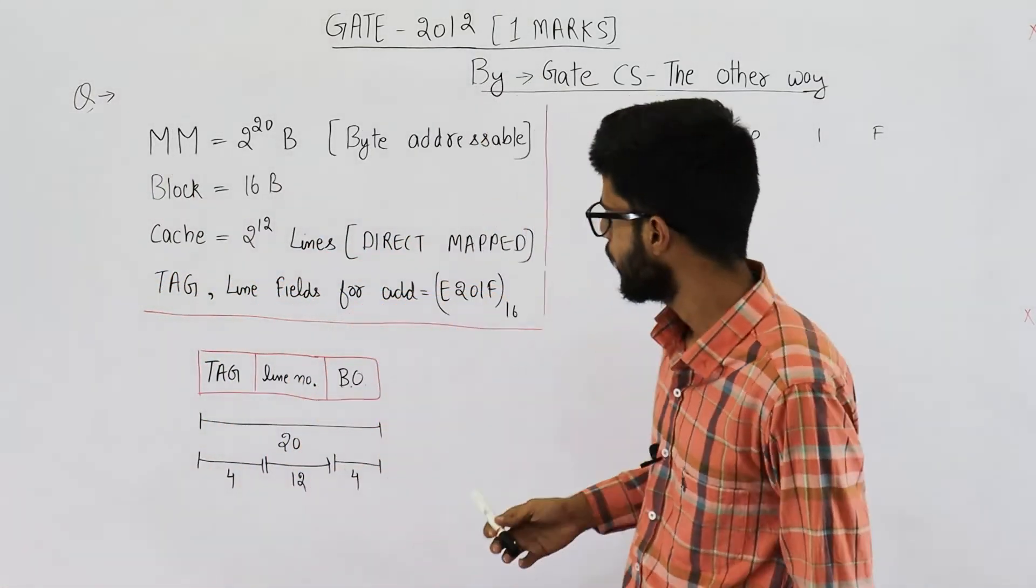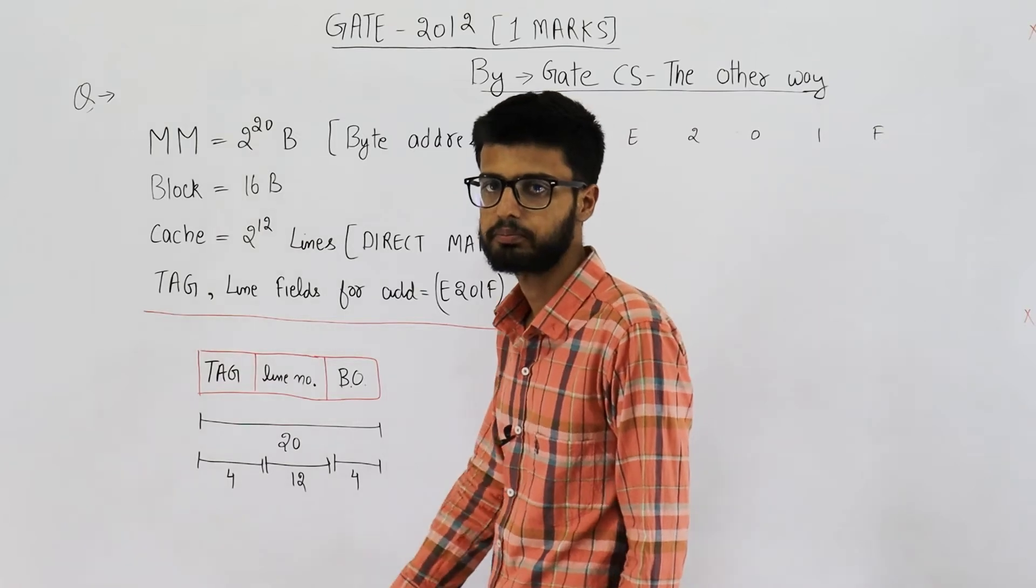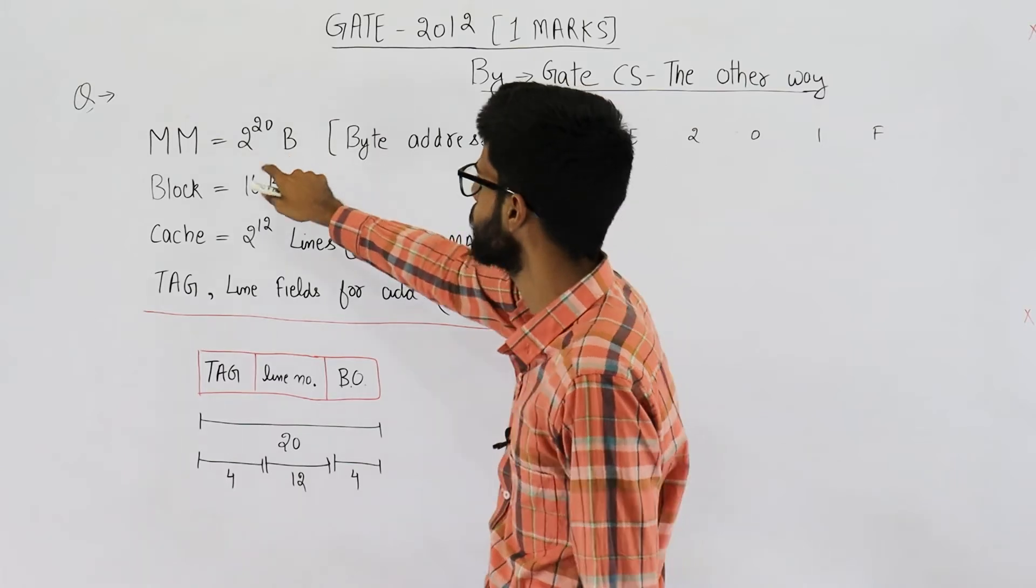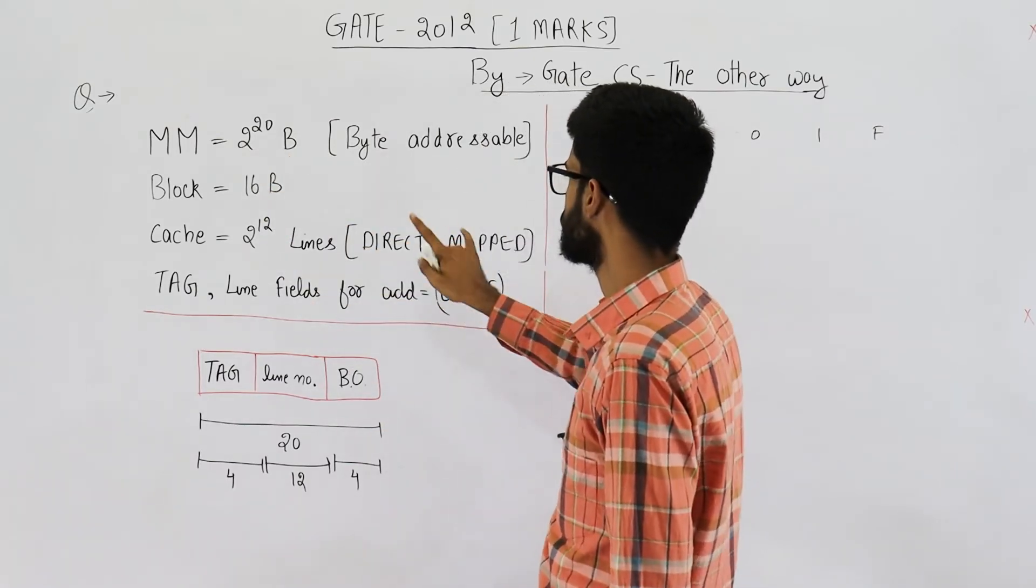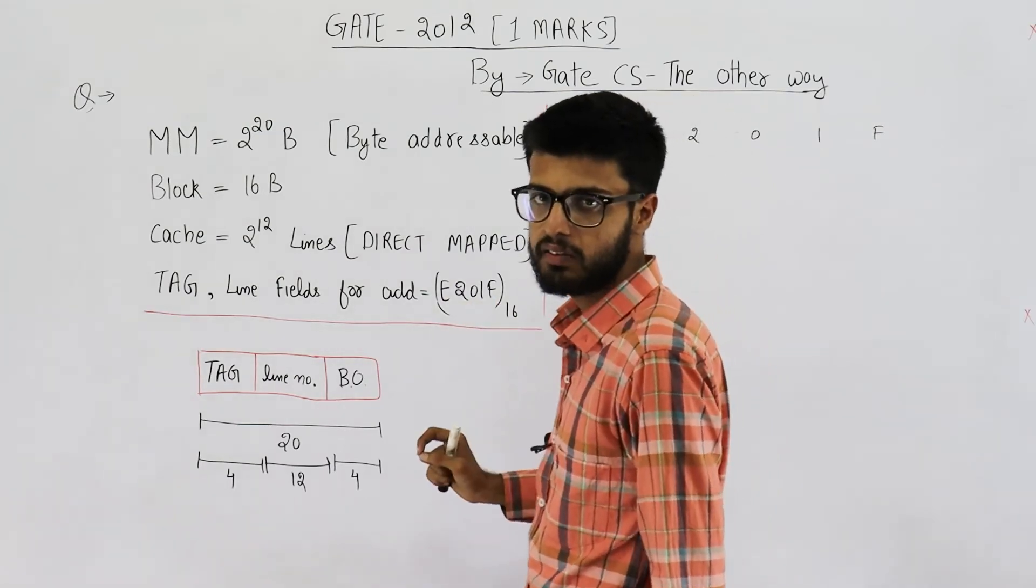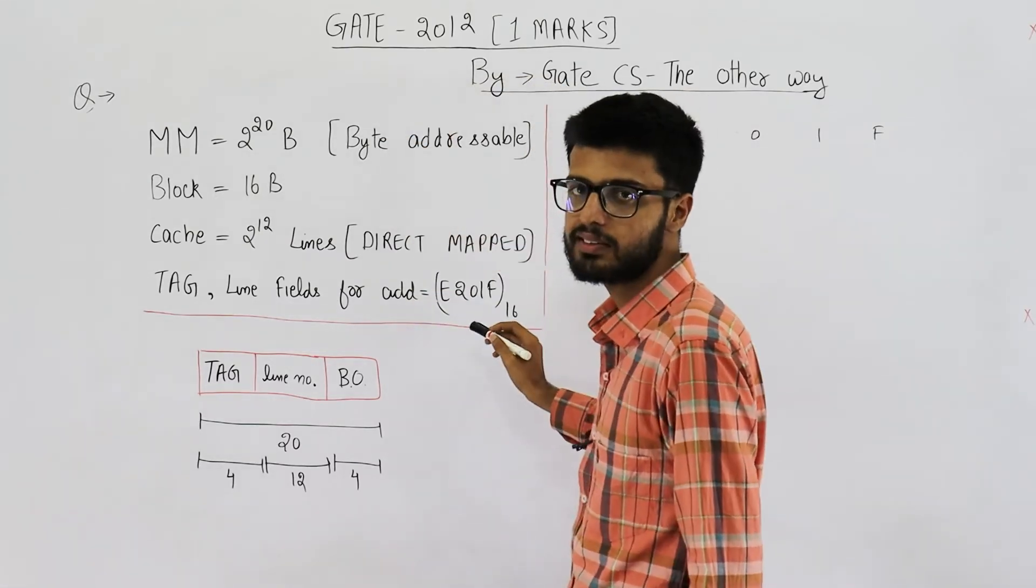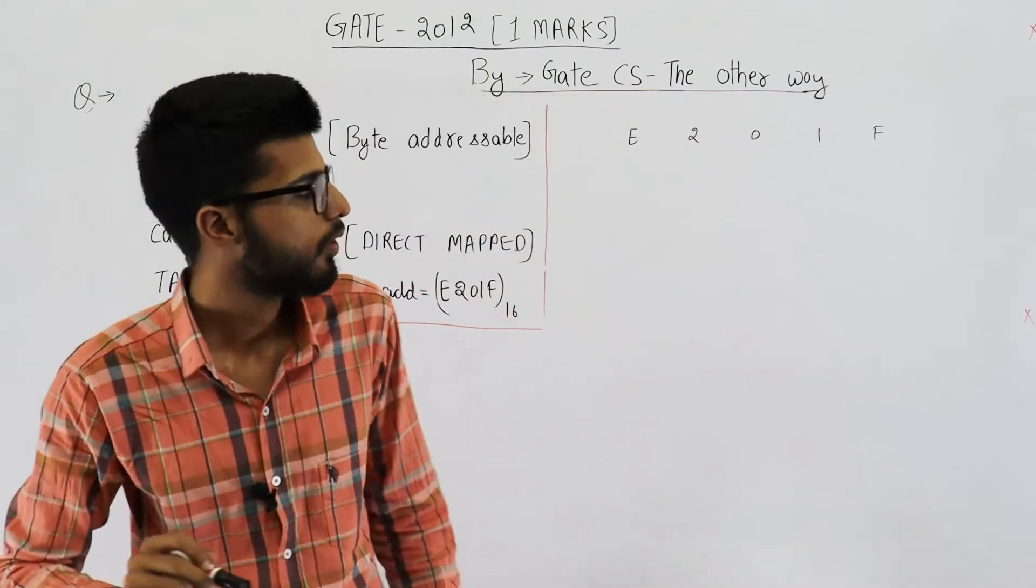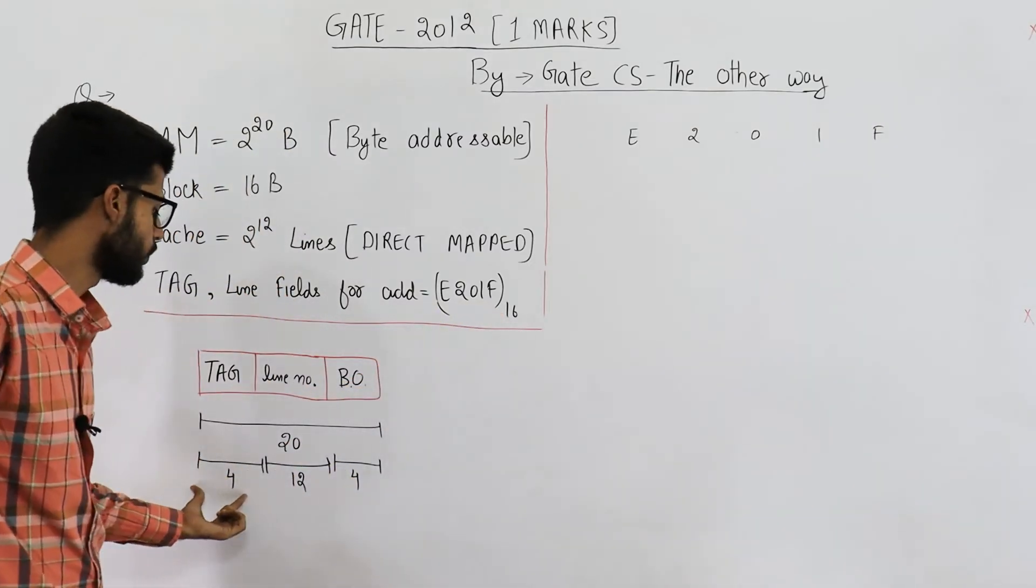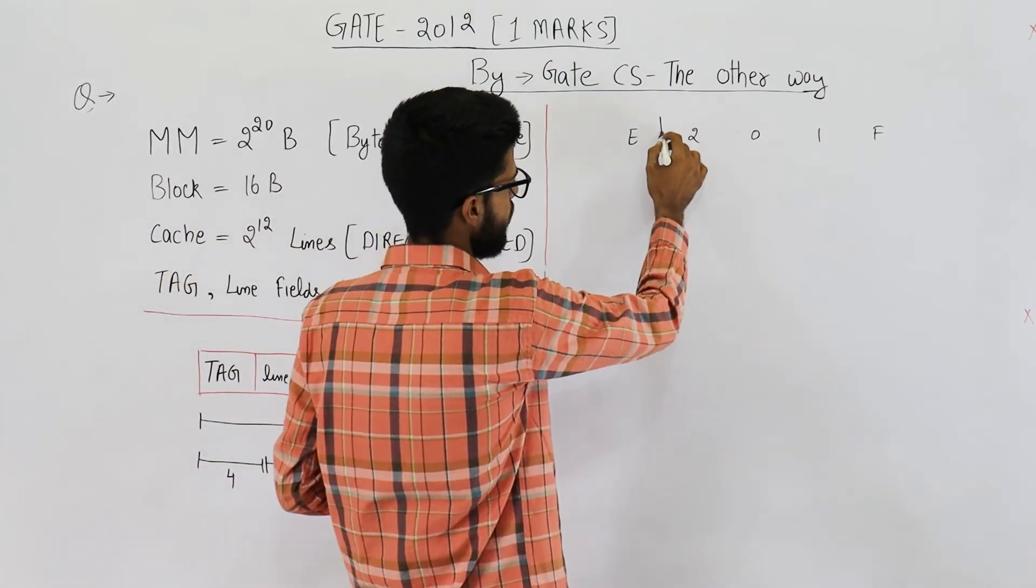Now they are asking about this address E201F to the base 16. This is a hexadecimal number, address of some byte in main memory. This is a 20-bit address: 1, 2, 3, 4, 5 - five letters each representing 4 bits. Now this will be split as 4, 12 and 4. So first split is at 4.